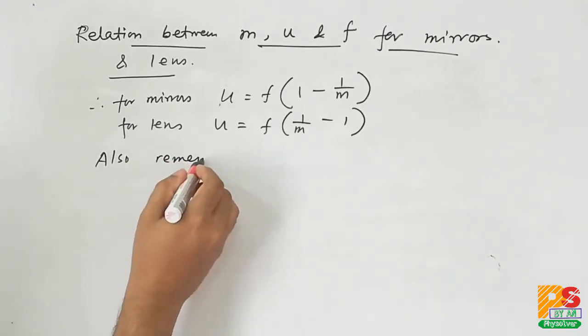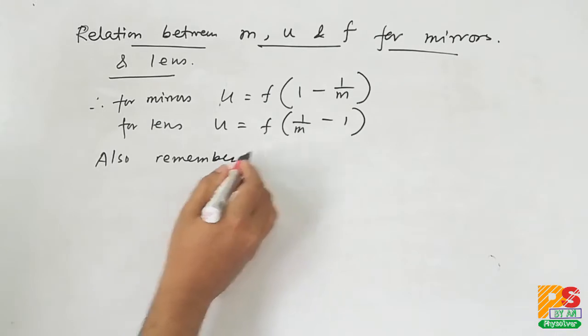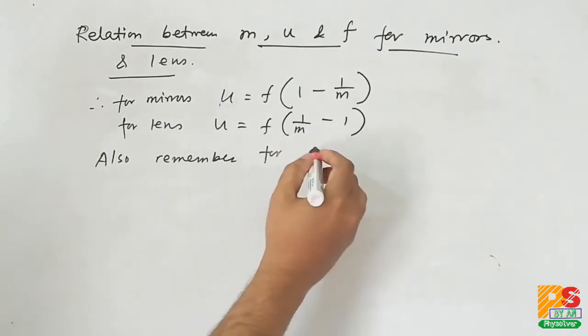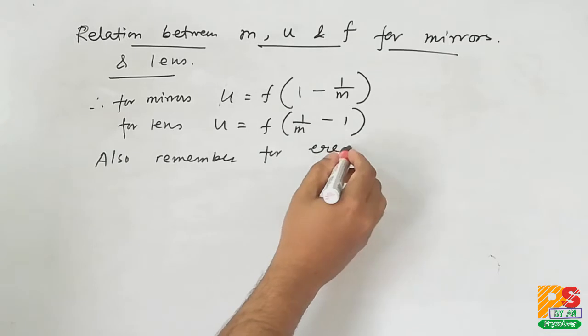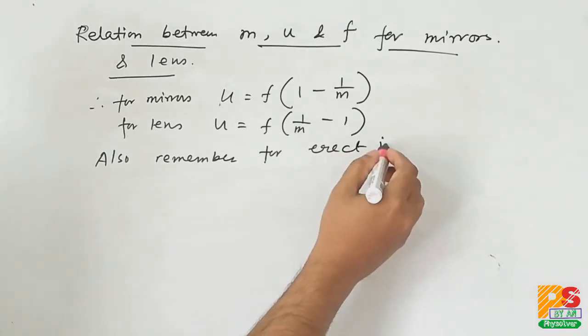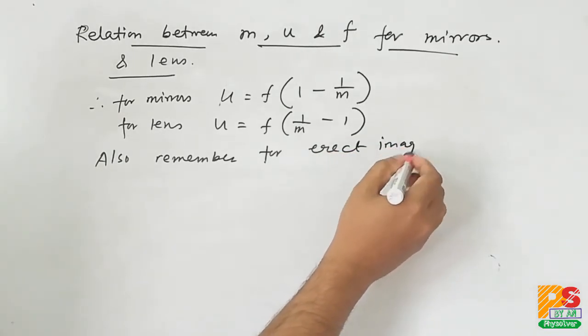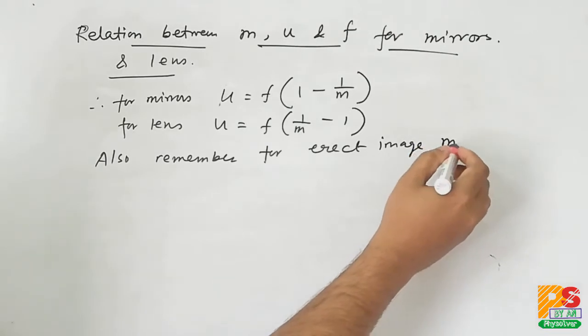Also remember that the linear magnification is positive when the image is erect, and m is negative when the image is inverted.